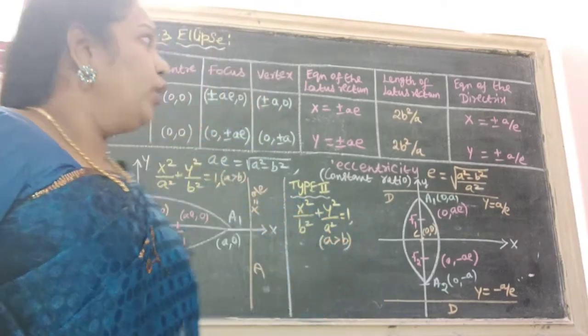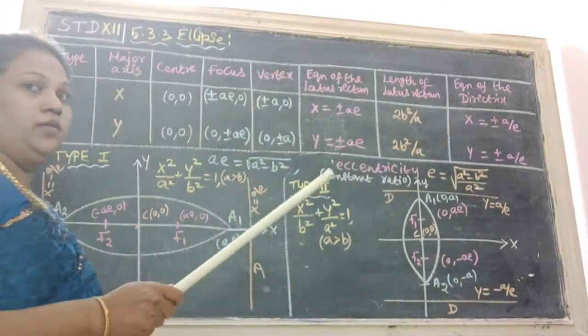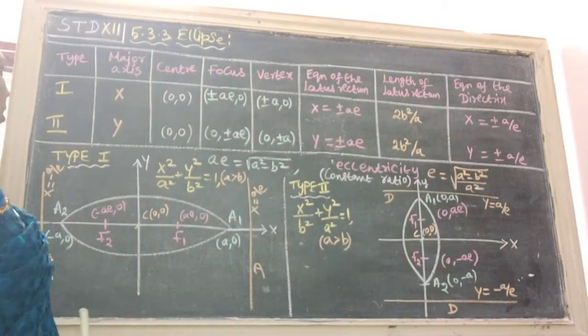Hi students, today we are going to see 5.3.3 ellipse. It is very easy one, 5th chapter.